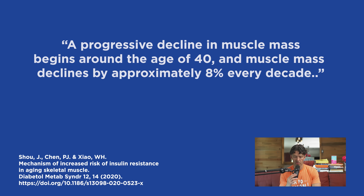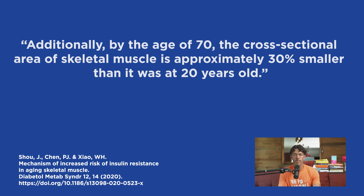Loss of the fast-twitch muscle fibers is a common occurrence with age, and it is associated with declines in insulin sensitivity and a concomitant increase in inflammation. After the age of 40, individuals experience an 8% loss of muscle total volume per decade. So by the time you're 70, your muscles are about 30% smaller, and most of that loss is occurring because of loss of the type two fast-twitch muscle fibers compared to 20 years of age. So you lose a significant amount of size and volume.